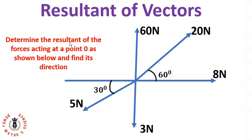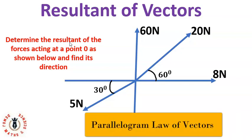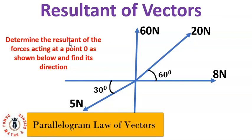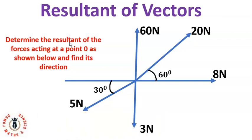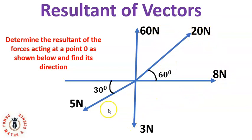In today's lesson we look at how to find the resultant of three or more vectors acting at a point. In our last lesson we saw how to use the parallelogram law to find the resultant of two forces acting at a point, but today we'll see how to find the resultant of three or more vectors. Here we have 60 newtons, 20 newtons, and 8 newtons, all acting at a point but in different directions.